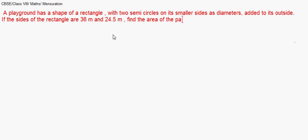Because it doesn't inform about the pi value, I will be taking 22 by 7. Now if we draw the figure for this, there is a rectangle and there will be two semi-circles. This is how it might look like.